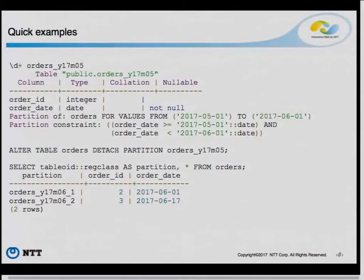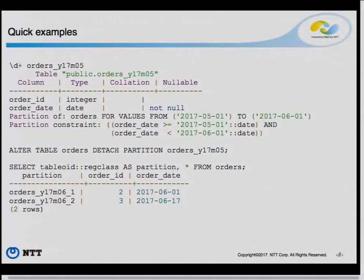You can look at the exact constraint the planner uses when dealing with a partition. Another command is DETACH PARTITION, which is a rollout. You can either drop a partition by saying DROP TABLE on the partition name and it goes away. Or you can detach it — detach removes it from the partition tree but it remains as a table. The table name remains the same and you can use it any way you want after that point.